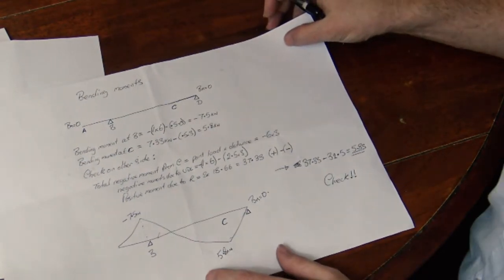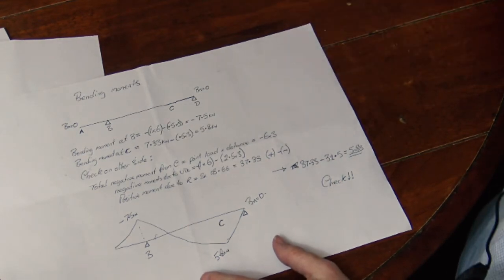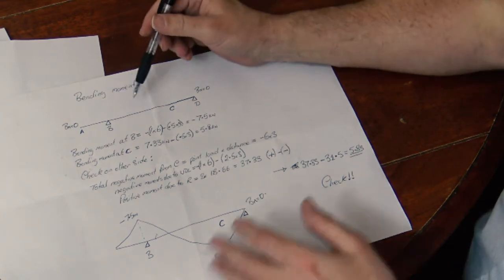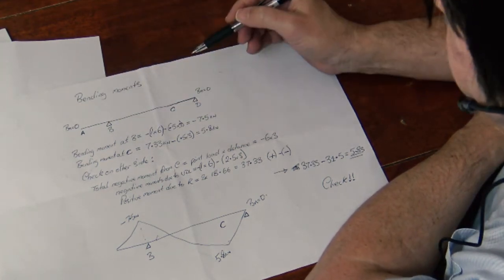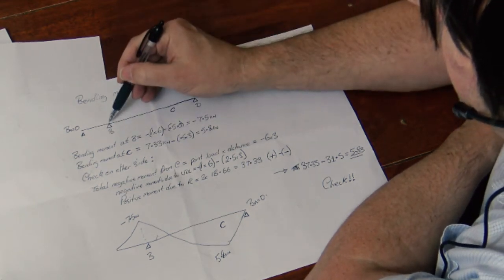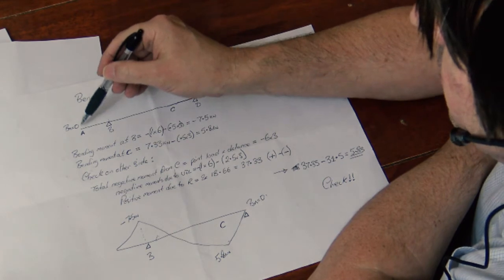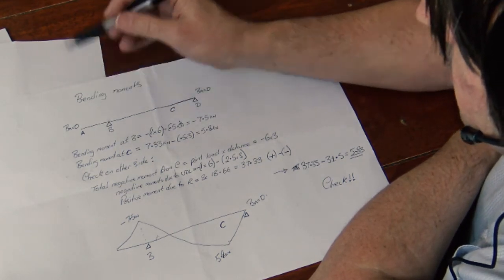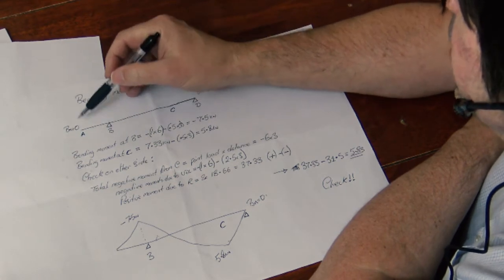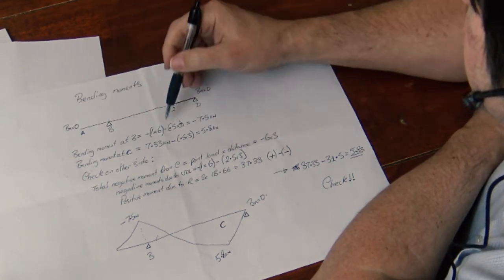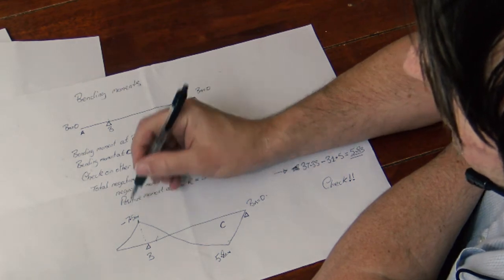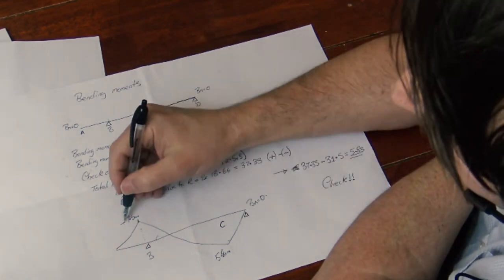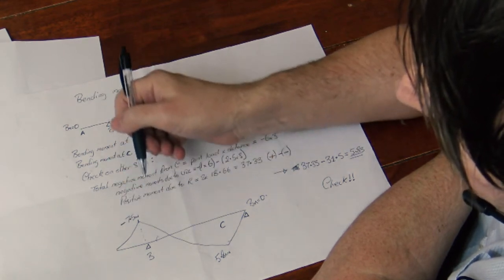From there we can go on to the bending moment diagram — this is just a quick sketch. As we've seen before, the bending moment at each end will be 0. The bending moment at B is due to the force acting downwards at that point and the uniform distributed load: minus 1 times 6, minus 0.5 times 3, gives minus 7.5 kilonewtons. That is its maximum at that point. We call this minus because it's acting downwards.